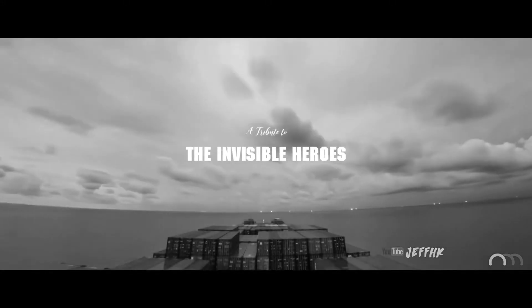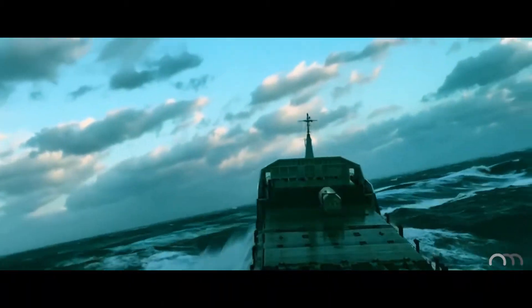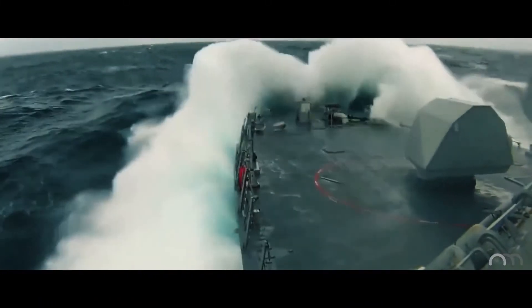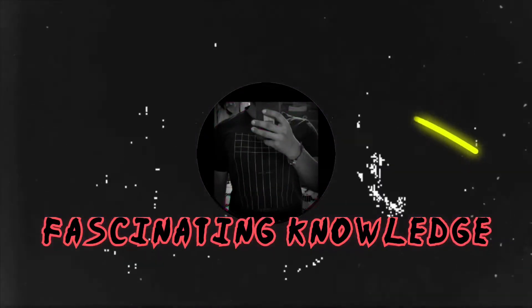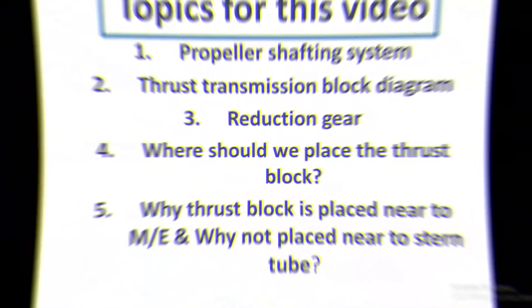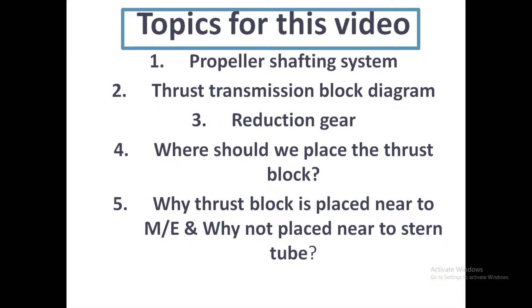Hello guys, welcome back to another video. In the last video we covered the fresh photo generator and you guys showed tremendous support - thank you so much. I am back with a new video and the topic for today is propeller shafting system and thrust block and its position. In this video we are going to cover five topics: propeller shafting system, thrust transmission block diagram, reduction gear, where should we place the thrust block, and why the thrust block is placed near the main engine and not near the stern tube.